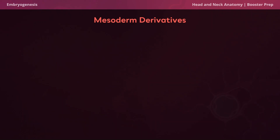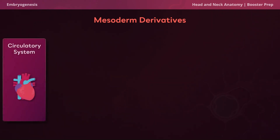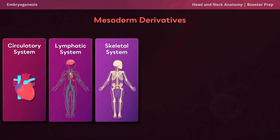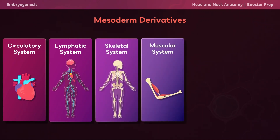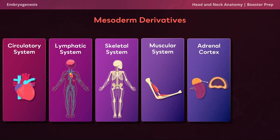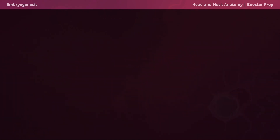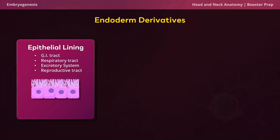Now let's move on to the mesoderm. The mesoderm derivatives include the circulatory system, the lymphatic system, the skeletal system which includes our bone marrow, the muscular system which includes things like cartilage, tendons, and other connective tissues in our body, the adrenal cortex, and the notochord.